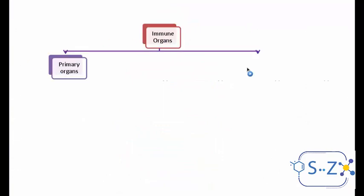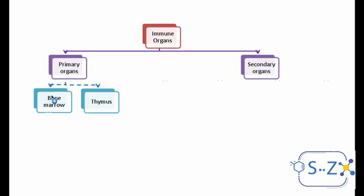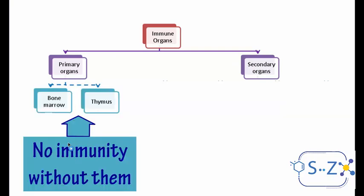These organs can be classified into two groups: primary organs and secondary organs. The primary organs are the bone marrow and the thymus. They are called primary because we have no immunity without them — any problem with the bone marrow or the thymus puts the immune system at high risk. It might shut down, and the person will be vulnerable and susceptible to many diseases.